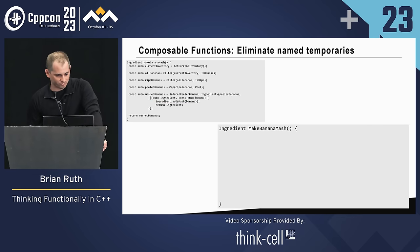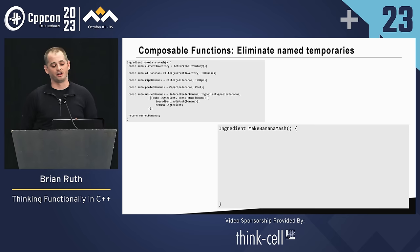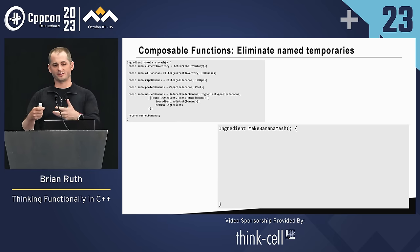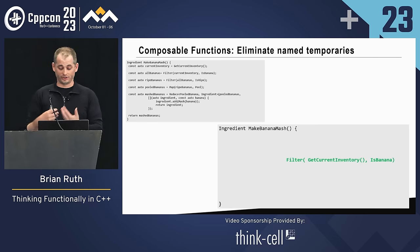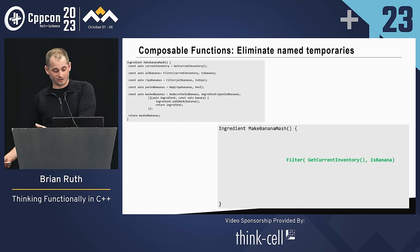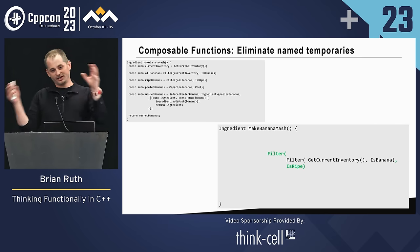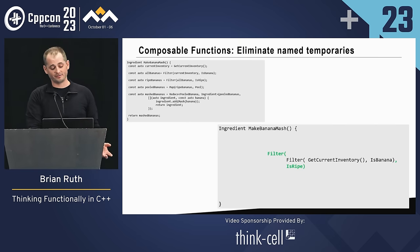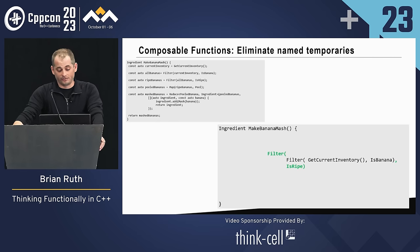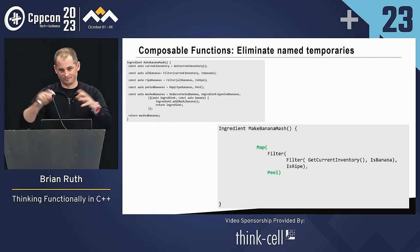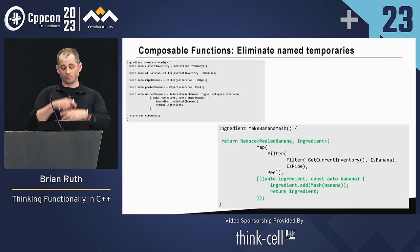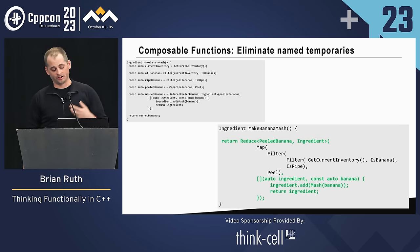We can eliminate those temporaries — chain functions together without all the named temporaries. The thought process is a little weird though — you have to start from the inside and work your way out. First we get the current inventory and filter on is_banana, returning that list. We immediately take that rvalue, pass it into the next filter for is_ripe, which returns another vector that gets moved into the map function. We map over it, then wrap it all in our reduce with add_ingredients, returning the ingredients.